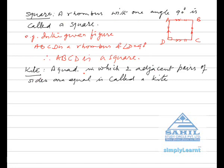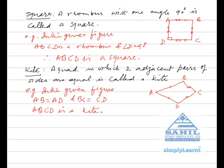Kite. A quadrilateral in which two adjacent pairs of sides are equal is called a kite. For example, in the given figure AB is equal to AD and BC is equal to CD, therefore ABCD is a kite.